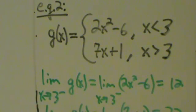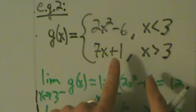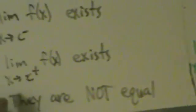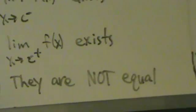So those are two examples of jump discontinuities. Again, it doesn't matter if the function is defined at the point or not. All that matters is that both one-sided limits exist and they're not equal to each other.